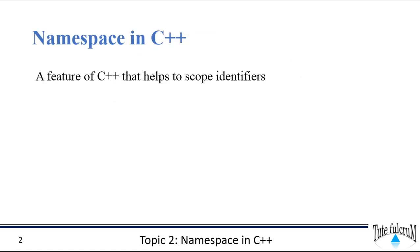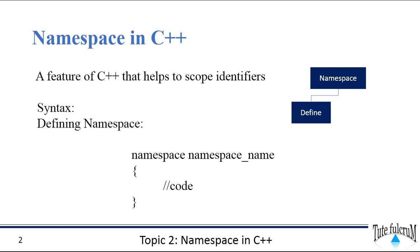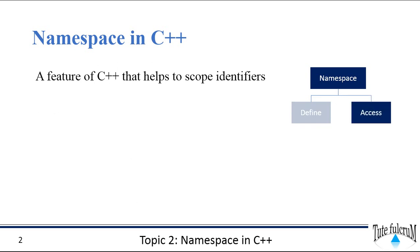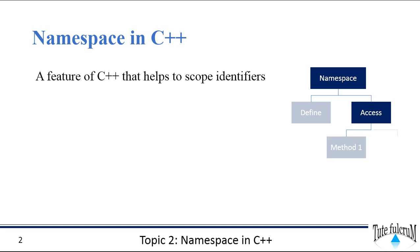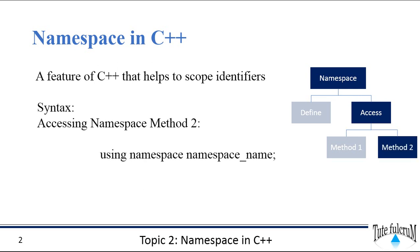Namespace acts as a region that provides scope to the identifiers used in the program such as functions and variables. We will be focusing on two points here: one is creating or defining your namespace, and the second is accessing the namespace. There are multiple methods for accessing your namespace, and in this session we will be discussing two methods. The first method is making use of the scope resolution operator, and the second method is using directive.